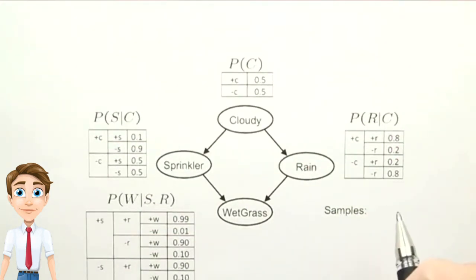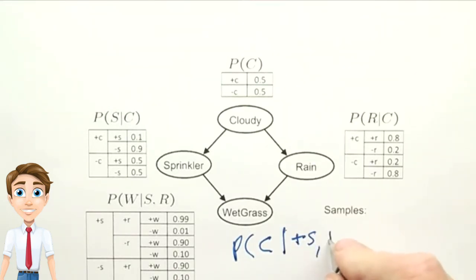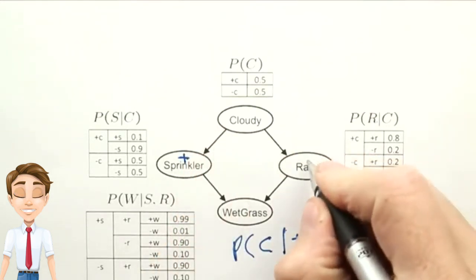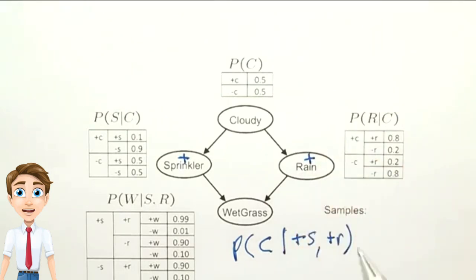Likelihood weighting is a great technique, but it doesn't solve all our problems. Suppose we wanted to compute the probability of c given plus s and plus r. In other words, we're constraining sprinkler and rain to always be positive.